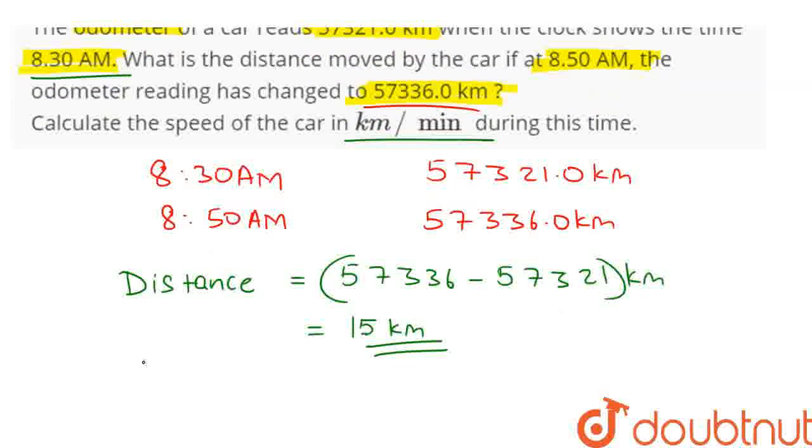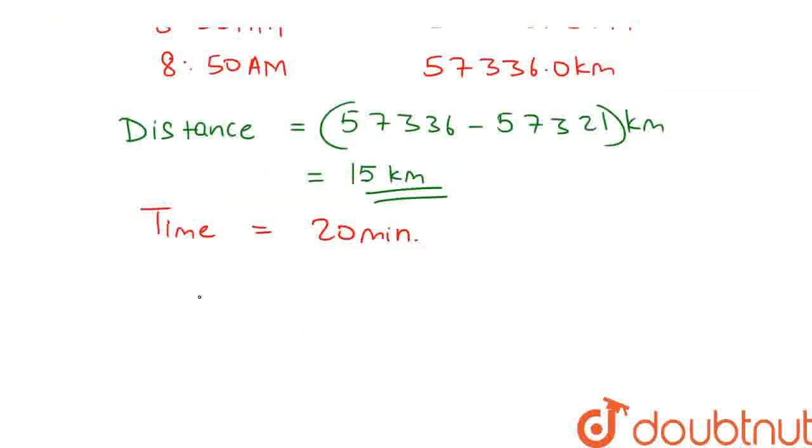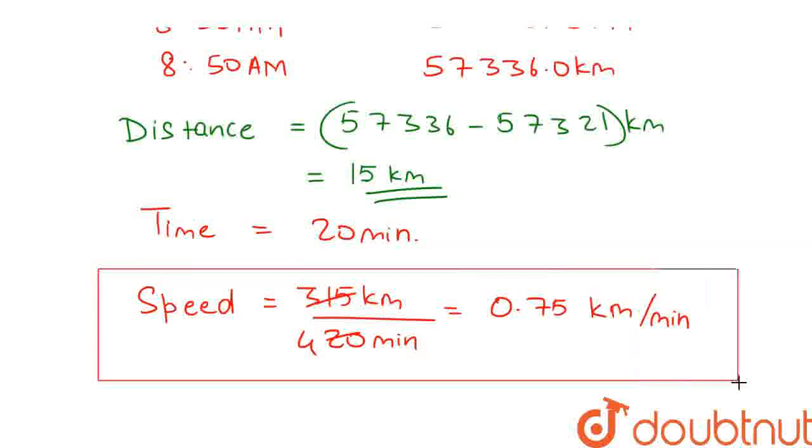So we can calculate the speed of the car by dividing distance with time. Speed is equal to distance which is 15 km divided by time which is 20 minutes. This is equal to 3 by 4 which is 0.75 and the units of the speed is km per minute. This is our answer.